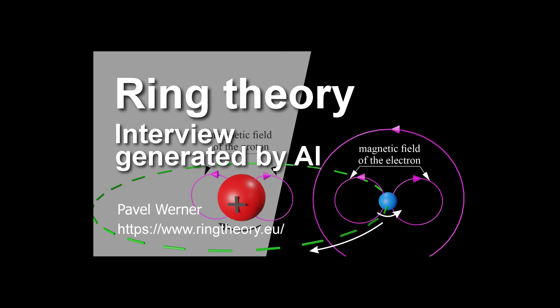Wow. Okay. So ring theory isn't just giving us a new picture of the atom. It's potentially rewriting our understanding of light and the very fabric of space-time. That's the incredible thing about it. It challenges us to rethink some of our most fundamental assumptions about how the universe works. And speaking of fundamental assumptions, let's talk about something that's always captured my imagination. Anti-matter. Anti-matter, right? It's like the evil twin of matter, always trying to destroy it? That's the popular image. In the standard model, anti-matter is this rare, exotic substance that annihilates matter on contact. But what if it's not so rare after all? What if it's actually hidden within the fabric of matter itself?